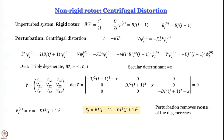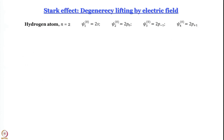Now we discuss an example where degeneracy is actually lifted: the Stark effect — the lifting of degeneracy by an electric field. We will go through this relatively quickly since we have introduced all the necessary tools.